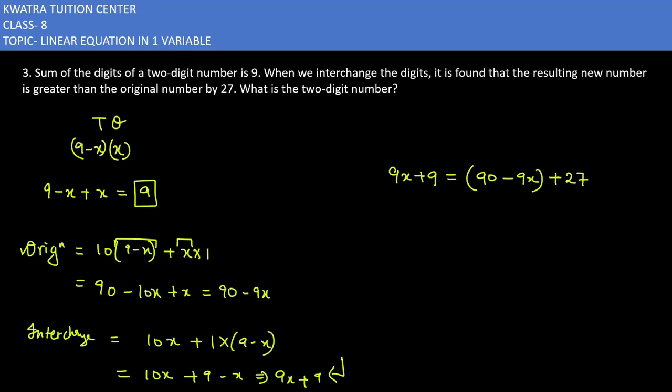So what you can do is reduce the value and find the x term. Move minus 9x to the left side: 9x plus 9x equals 18x. On the right side: 90 plus 27 minus 9 equals 108.